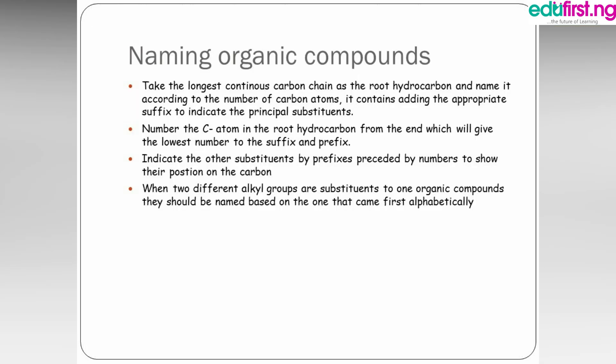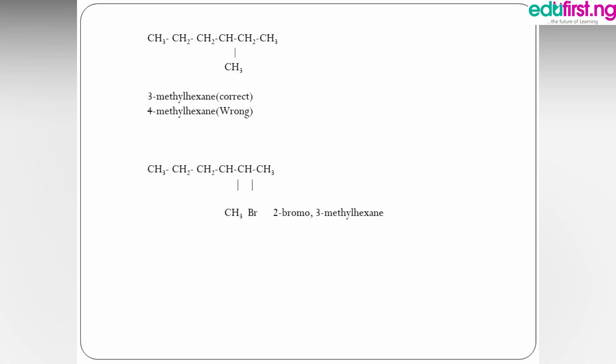Rule two: number the carbon atoms in the root hydrocarbon from the end which gives the lowest number to the suffix and prefix — that is, to where substituents are attached. For example, if counting from the right gives substituent position 4, and counting from the left gives position 3, you choose the lowest: 3. So the name becomes 3-methylhexane, since hexane is the longest carbon chain of six.